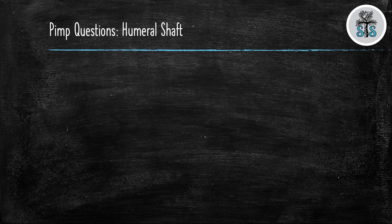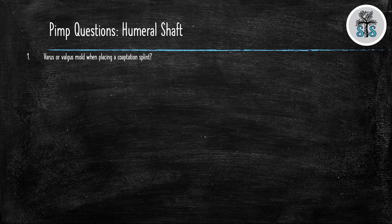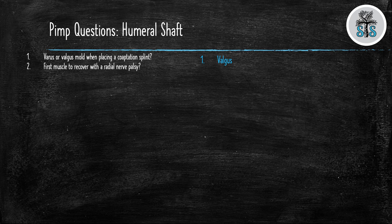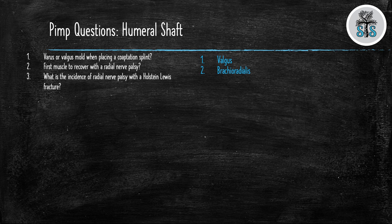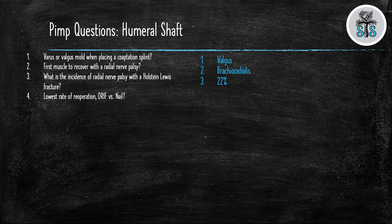Let's finish our discussion with some pimp questions. Question 1: Varus or valgus mold when placing a coaptation splint? Valgus. What is the first muscle to recover with a radial nerve palsy? Brachioradialis. What is the incidence of radial nerve palsy with a Holstein-Lewis fracture? 22%. The lowest rate of re-operation, open reduction versus a nail. Open reduction internal fixation has the lowest rate of re-operation.